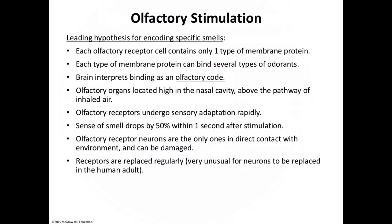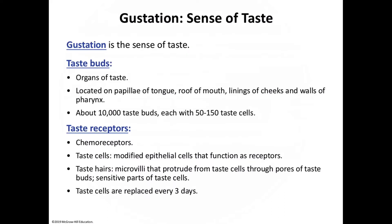How smell receptors encode specific smells is not wholly understood, but the hypothesis is that each olfactory receptor cell has many copies of one type of olfactory receptor membrane protein, and that receptor protein combines with several types of molecules. From here we move to the sense of taste.